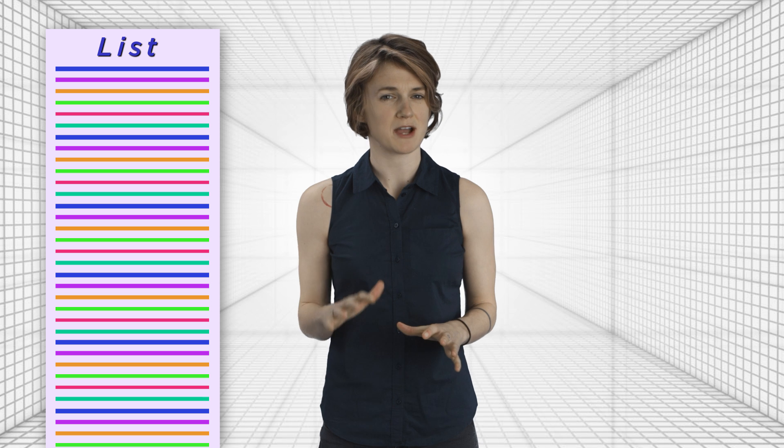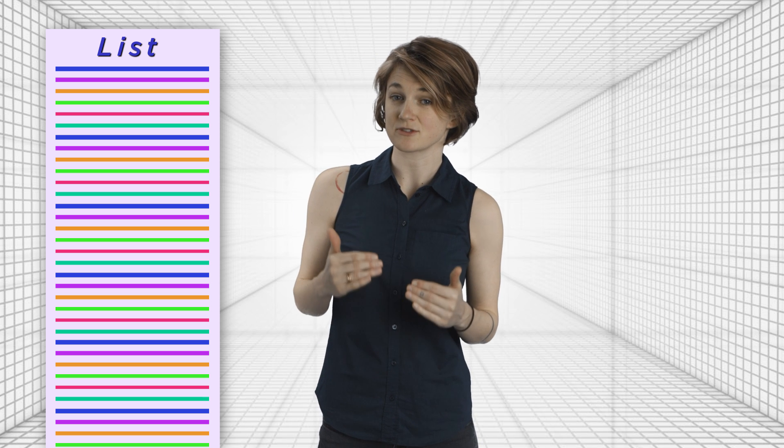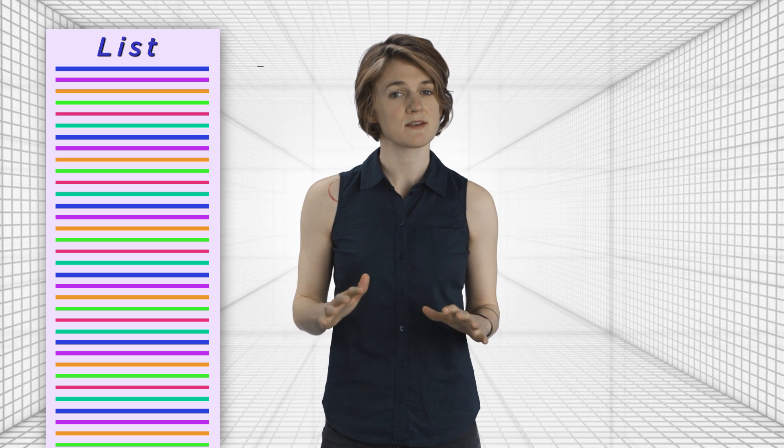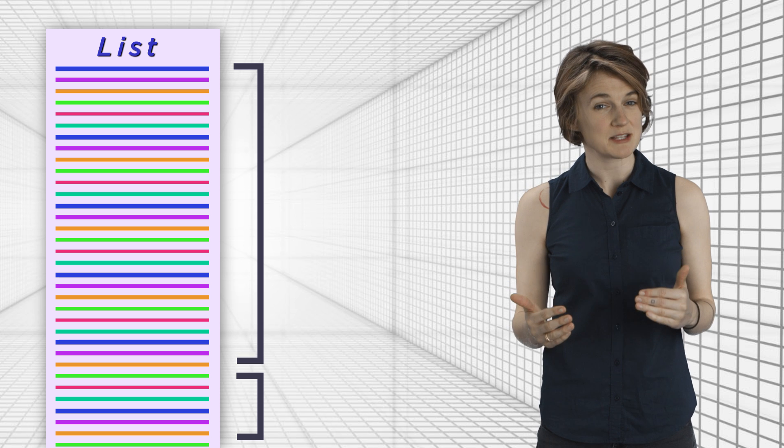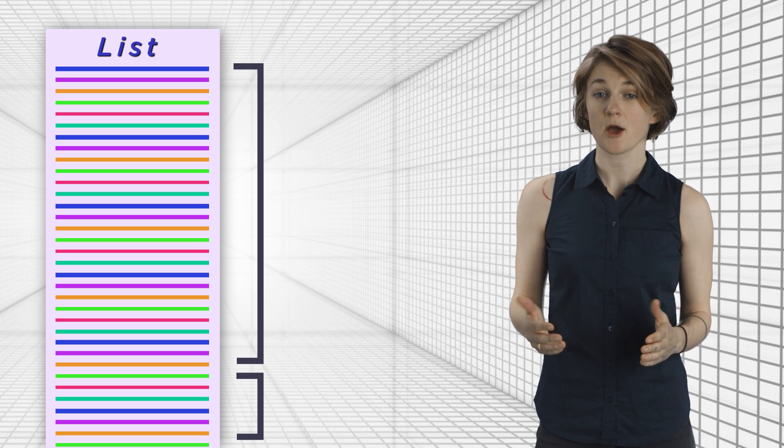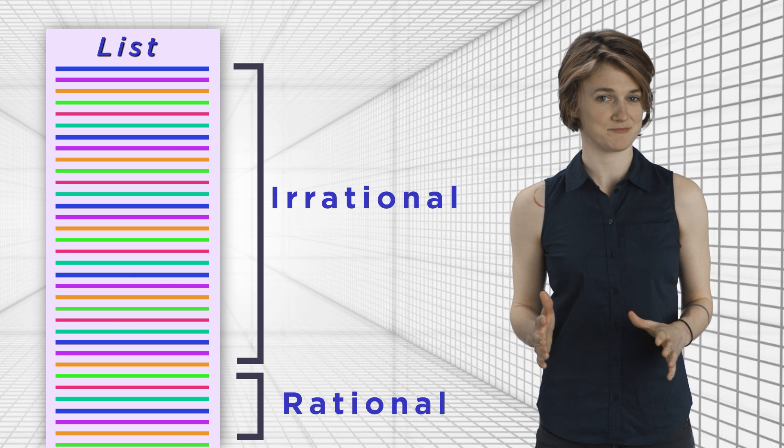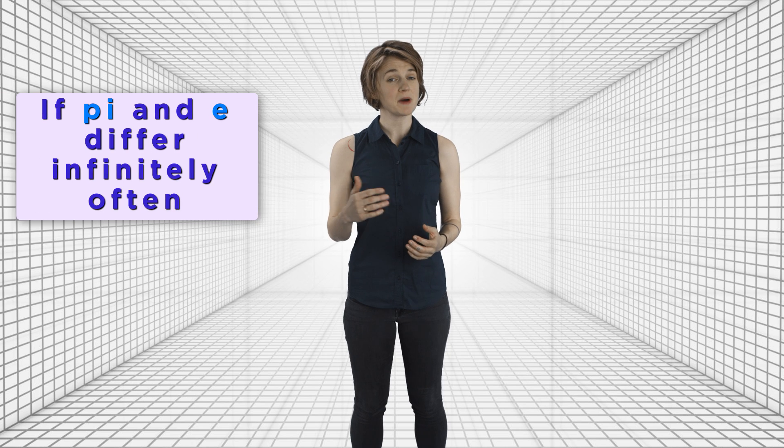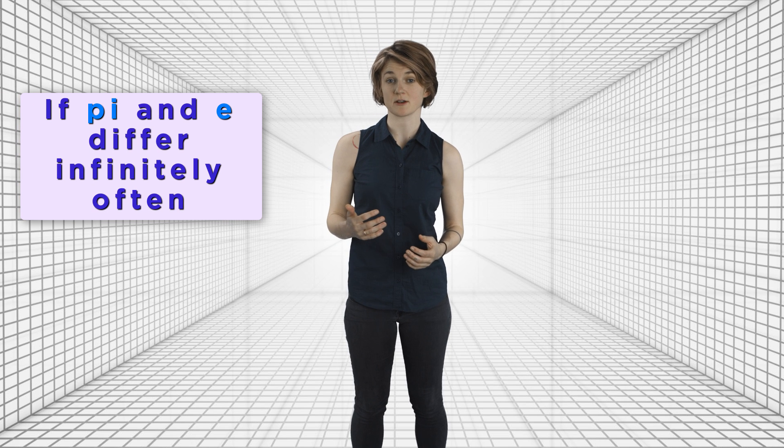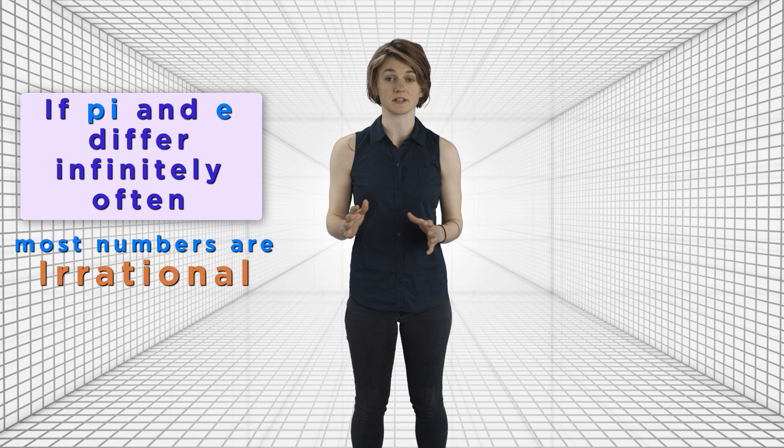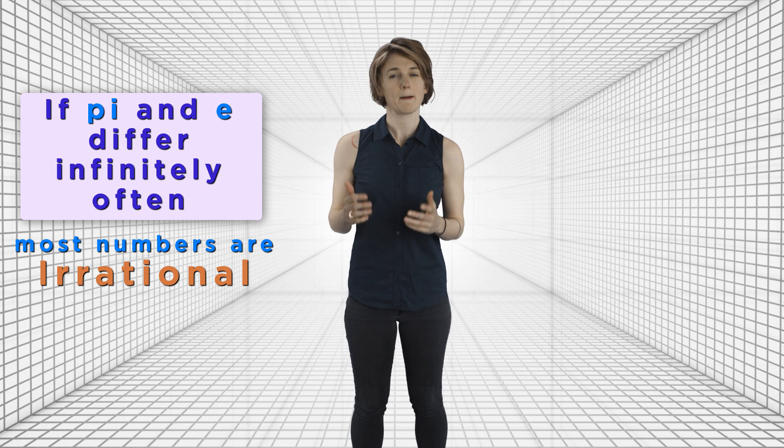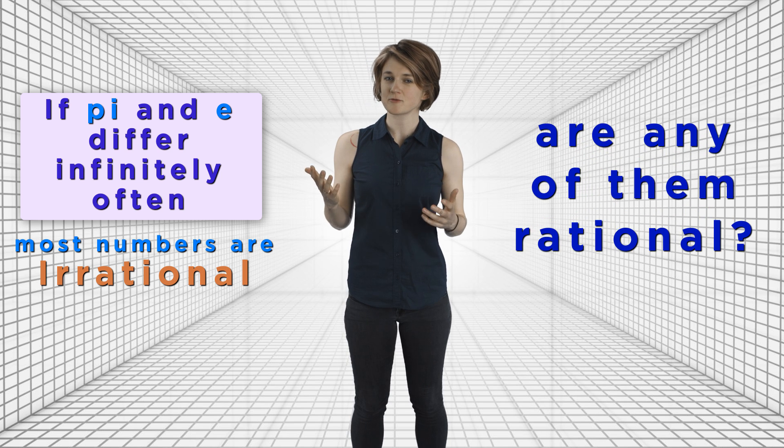That means there are more numbers on the list than there are rational numbers. So only countably many pairs of numbers have a rational number. That means for most of the infinitely many pairs of numbers on the list, both numbers are irrational. So if pi and e differ infinitely often, most of the numbers on our list are irrational. But are any of them rational?